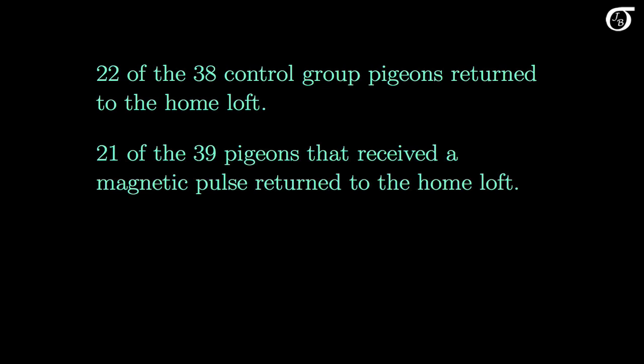22 of the 38 untreated pigeons in the control group navigated back to the home loft, and 21 of the 39 pigeons that received a magnetic pulse returned to the home loft. This was an experiment, but in a sense we can view these groups as samples from theoretical populations of homing pigeons that could have been released. We may wish to investigate a possible difference in the population proportions of birds that are able to navigate home.